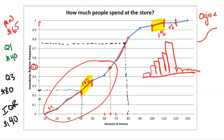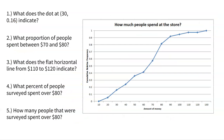We'll talk more about that when we look at another one. It's a little bit harder to see shape with a cumulative relative frequency graph, but it can be done. Now let's look at this specific graph again and ask some questions to make sure everybody truly understands this. For example, what does the dot at 30 comma 0.16 indicate?